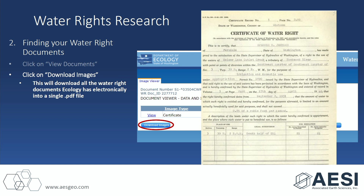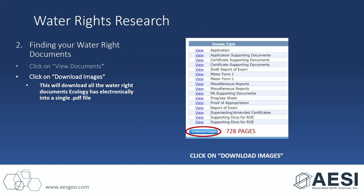I'm going to give you an example of another file — this one has 728 pages. The difference is this is a more complex water right, but it also shows that the last file was missing documents. Keep in mind that a certificate at a minimum should have an application, an IE, a permit, a proof of appropriation, and then either a public notice in addition to the certificate. For claims, they should have at a minimum either the long-form claim or the short-form claim.